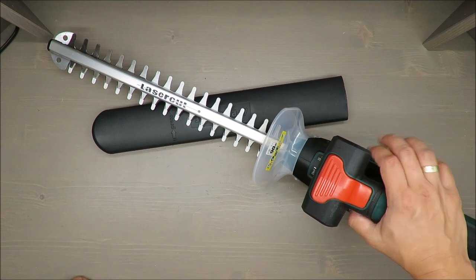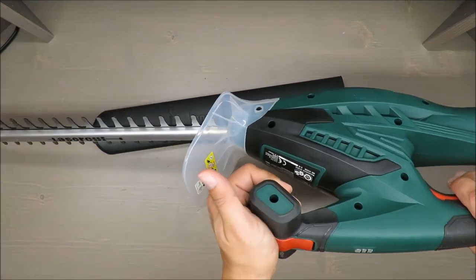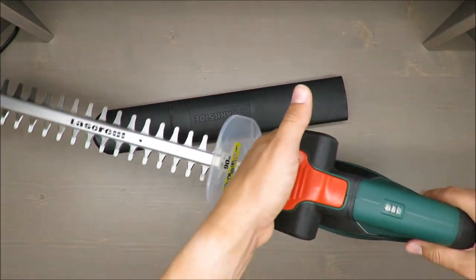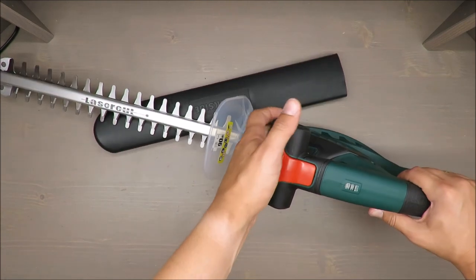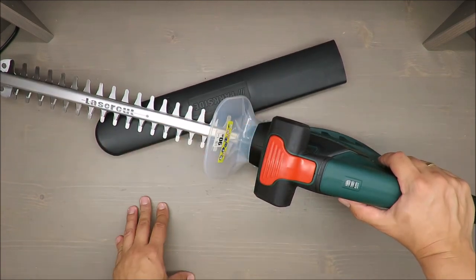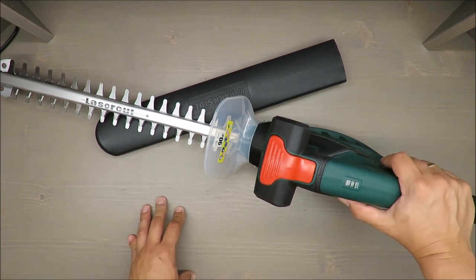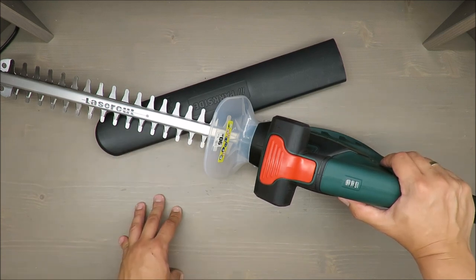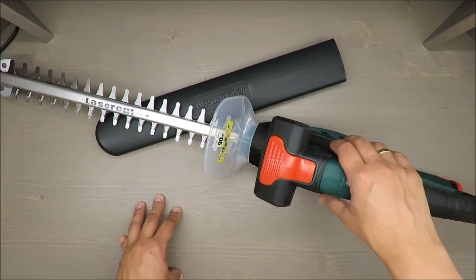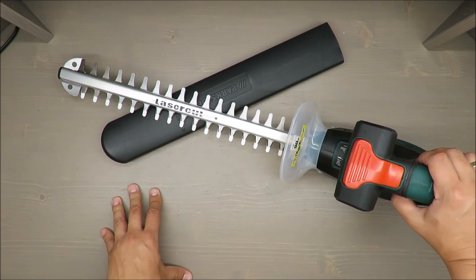Two-hand safety switch with quick blade stop—I think it's standard. You cannot turn it on without keeping it in both hands; it's a question of safety, but it's okay. In terms of basic parameters: no load rotation speed is 1200 rpm, cutting length approximately 35 centimeters, branch diameter maximum 12 millimeters.